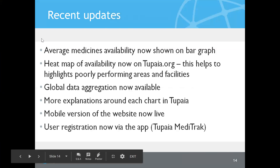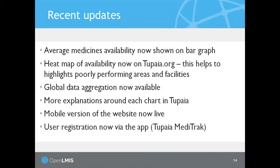These are some recent updates to Tupia. One of the most exciting is the mobile version of the website — you can now go to tupaia.org on your phone and pull up all the same dashboards and facility-level dashboards, which is really important for people in the field. A big advantage is for disaster response: when a team is in the field locating facilities and identifying resources, they can do that from their mobile phone. User registration is now easier and there are new charts.